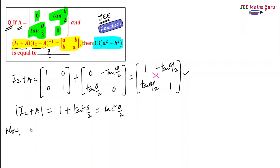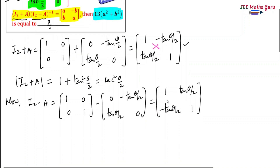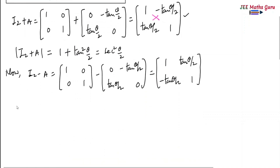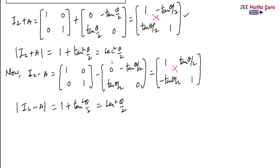Now I will write the matrix I₂ − A. Here I₂ is [1 0 / 0 1] minus given matrix A with elements 0, −tan(θ/2), tan(θ/2), and 0. So I₂ − A is [1, −tan(θ/2) / tan(θ/2), 1]. Its determinant is also equal to 1 + tan²(θ/2) which equals sec²(θ/2).